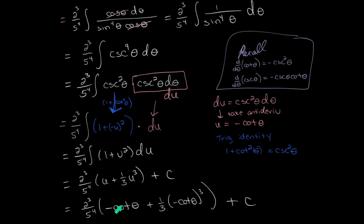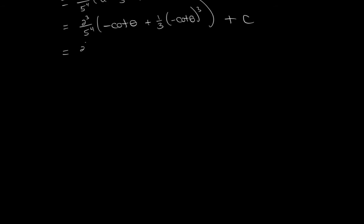We've got u converted back into thetas, and next we need to convert the thetas back into x's. Before doing that, let's simplify the minus signs a little bit, and then we can focus on converting the thetas back into x's.